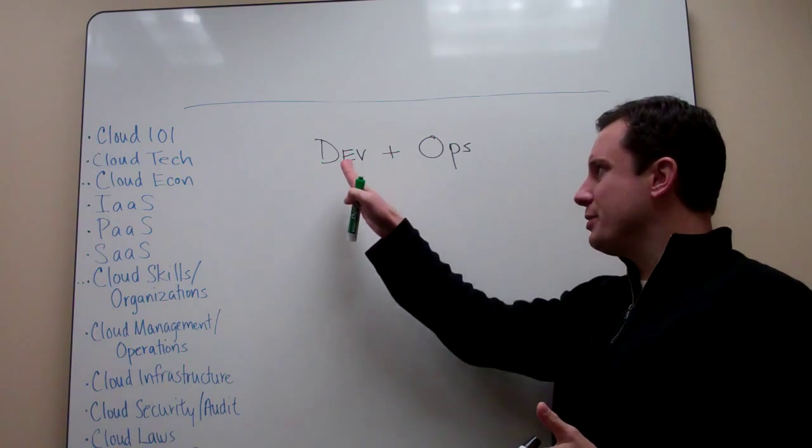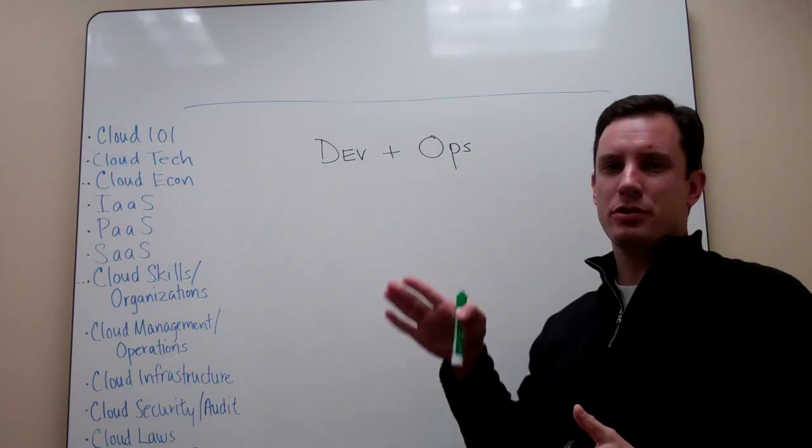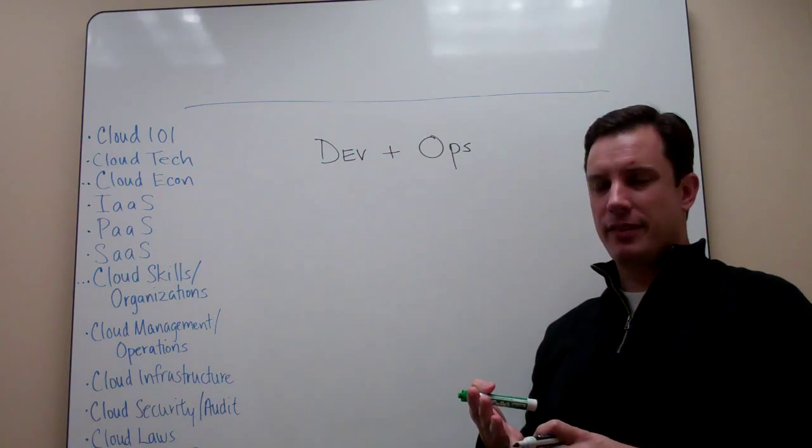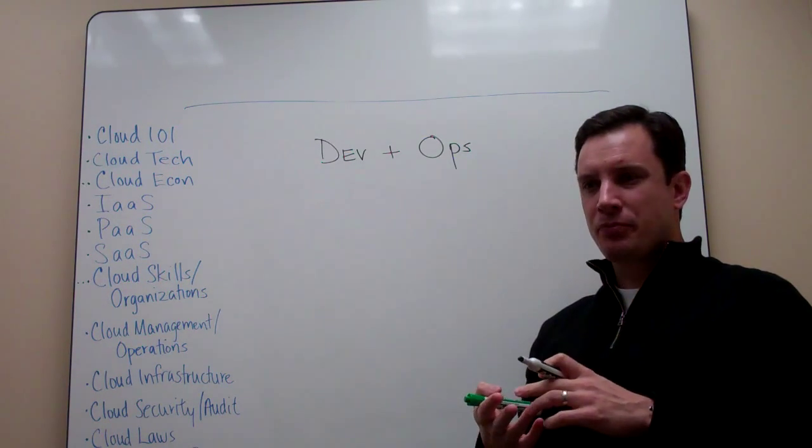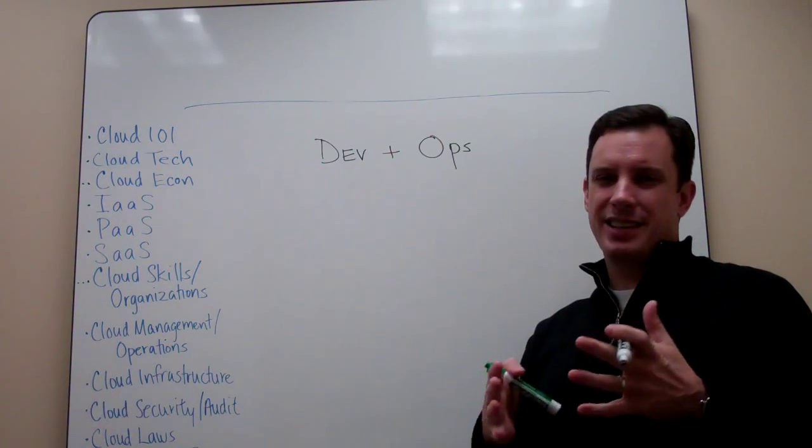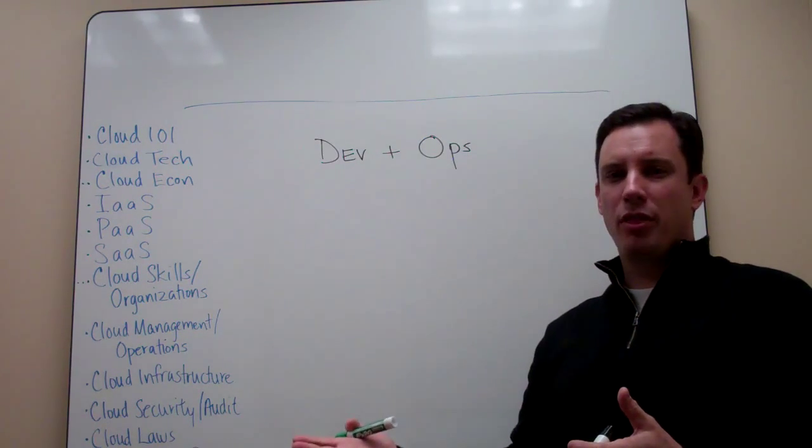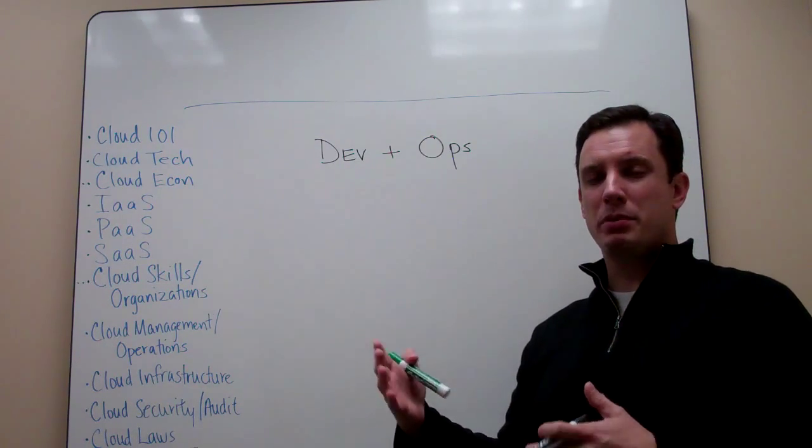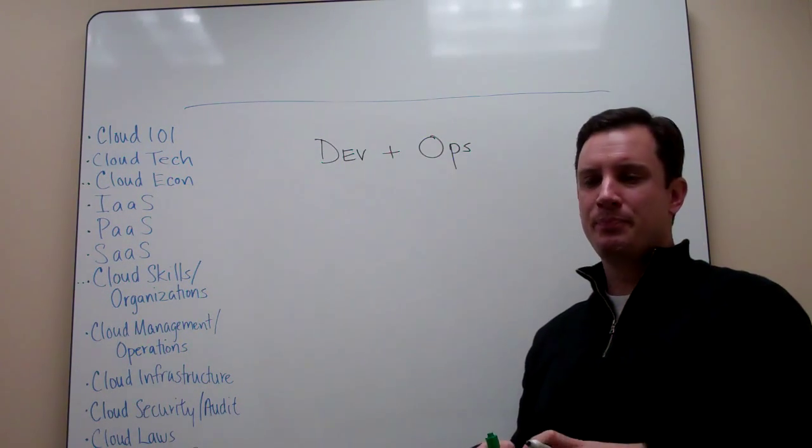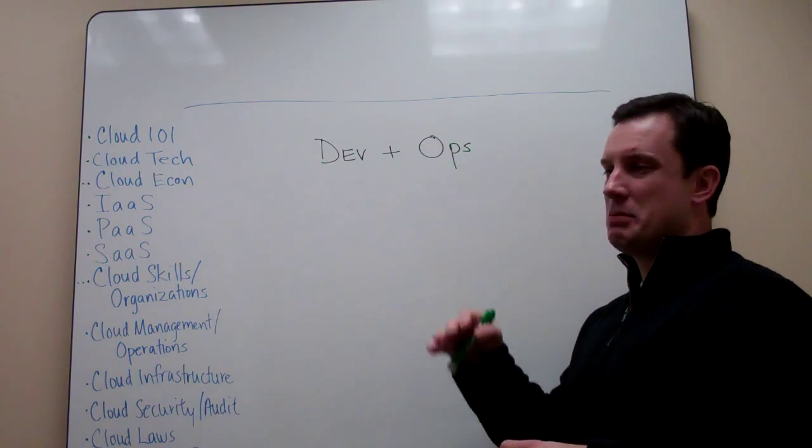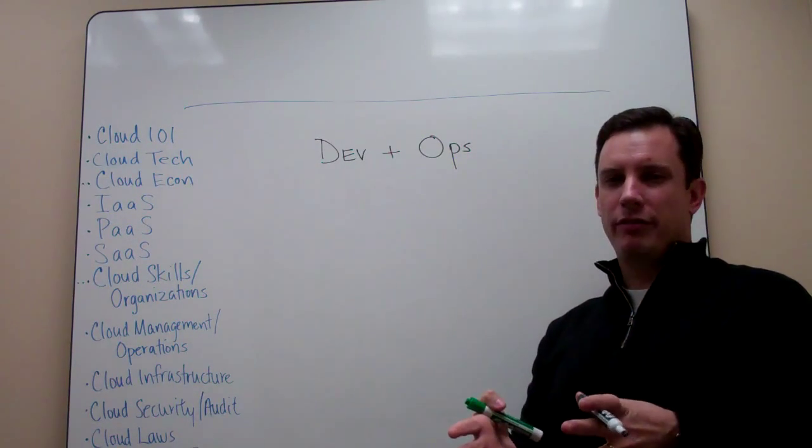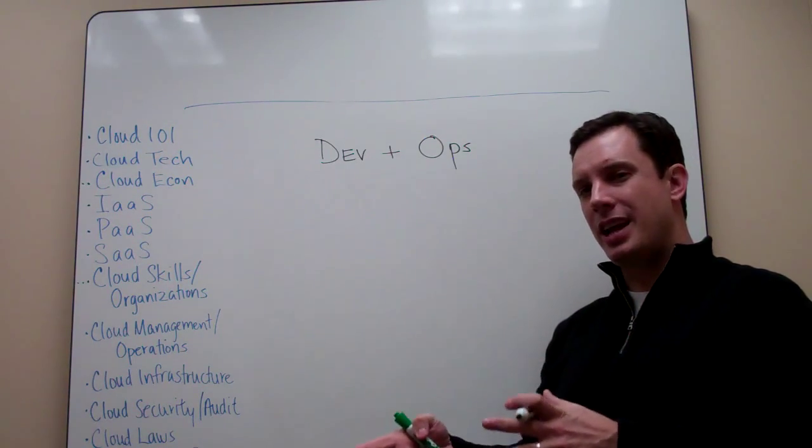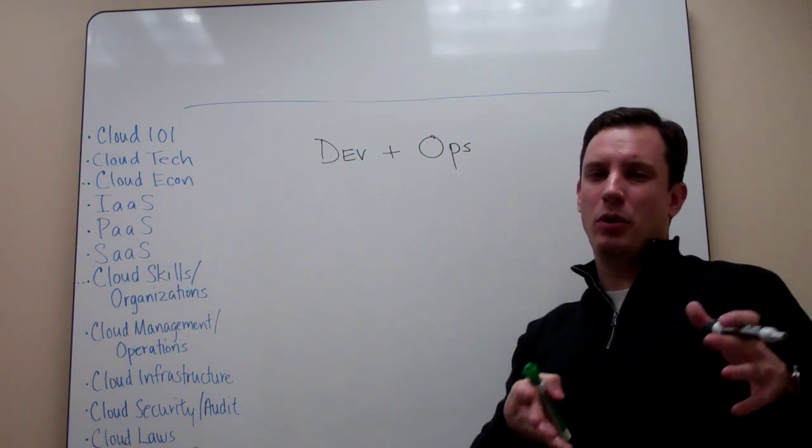In the past, these were very diametrically opposed groups. The development people were specifically responsible for getting the application developed, testing it, doing unit testing and scale testing, but they weren't the ones who necessarily were there when it went down. They may have been pulled in, but they weren't monitoring it 24 by 7. And the operations team didn't necessarily know all the fine details of how an application was built. They just knew it was an application. They had to maintain the operating system, network, and storage.